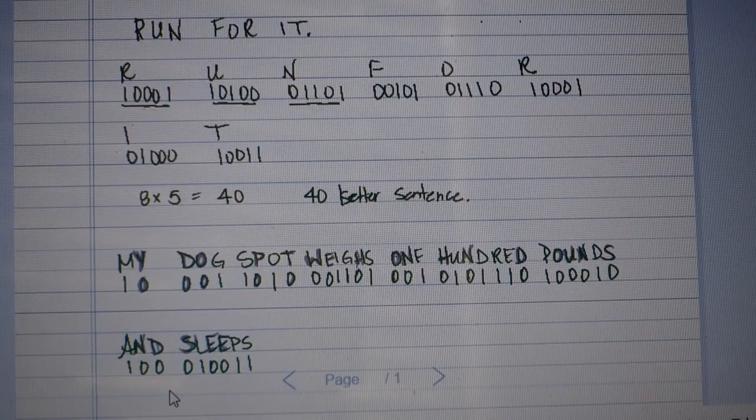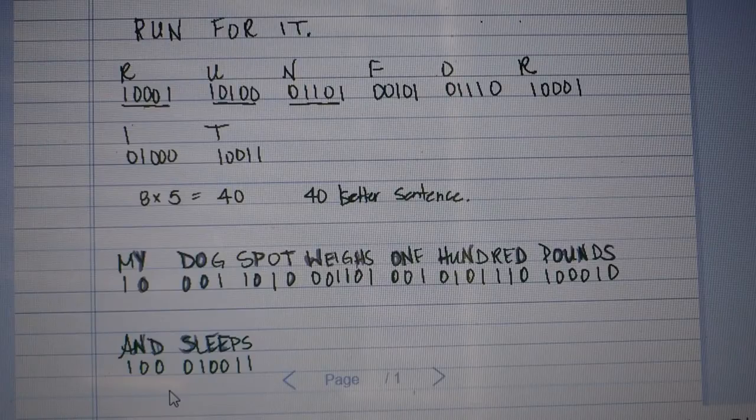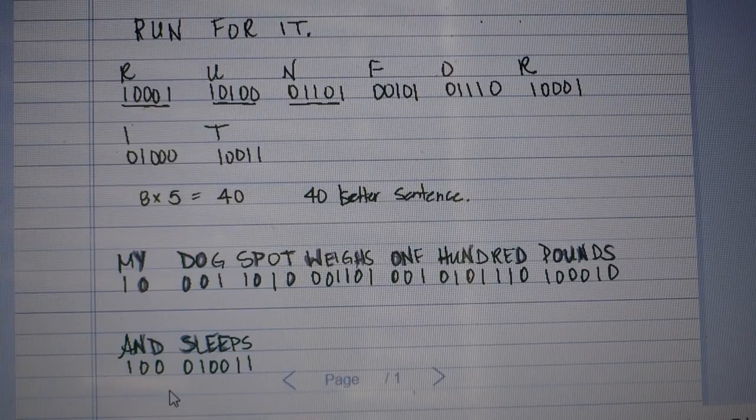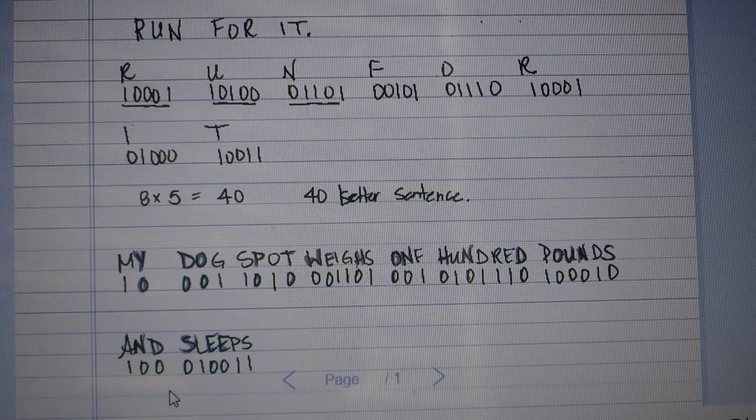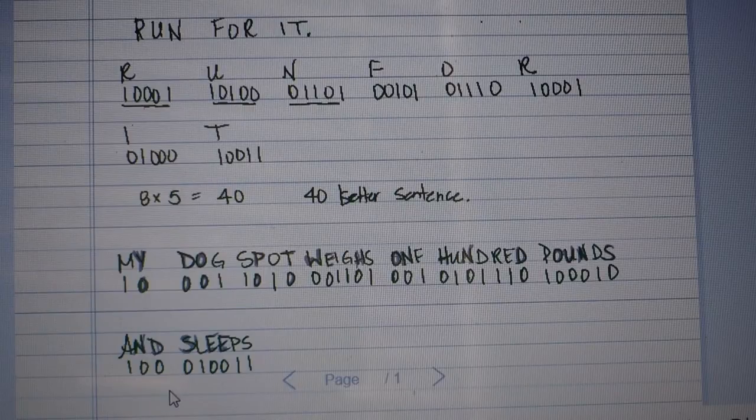Okay. So now we have encoded "My dog Spot weighs 100 pounds and sleeps." The directions in the exam and in the homework tell us to put the zeros in bold. So of course it's going to be easier to do on a computer, but I'm going to try to show you what it looks like here by just kind of going over my zeros.